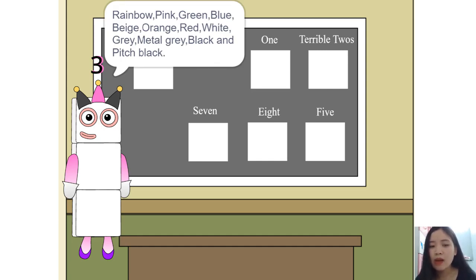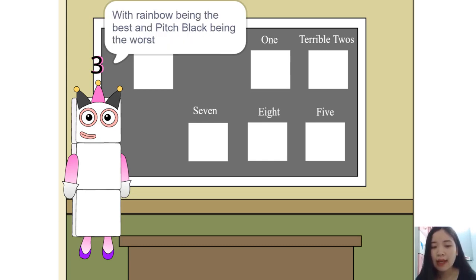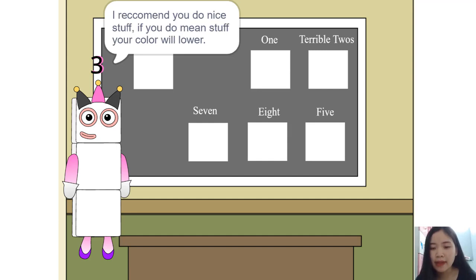white, gray, metal gray, black, and pitch black. With rainbow being the best and pitch black being the worst, I recommend you do nice stuff. If you do mean stuff, your color will lower.